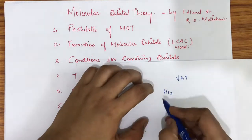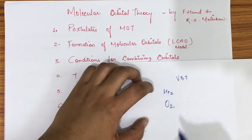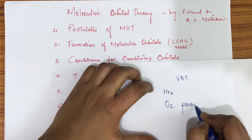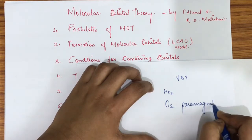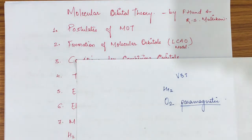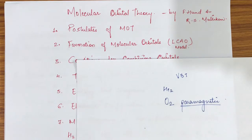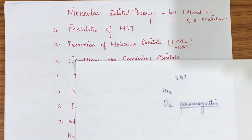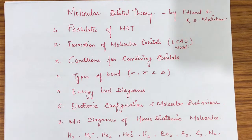Another question is: why is the oxygen molecule paramagnetic? This question cannot be answered through the valence bond theory or Lewis dot structure. When we draw the O₂ molecule, we see there is no unpaired electron — so why is it paramagnetic? Molecular orbital theory gives us the answer, and this is the importance of this theory that we need to learn.